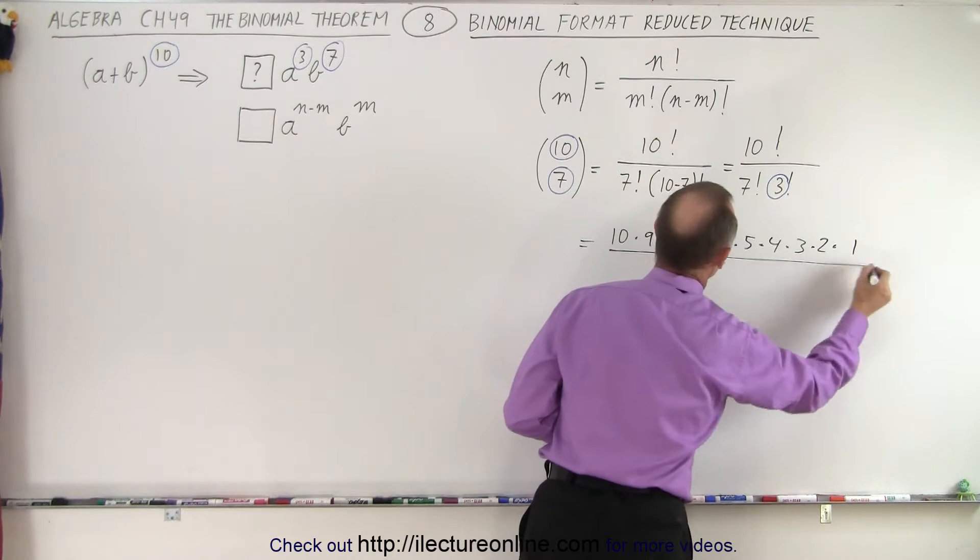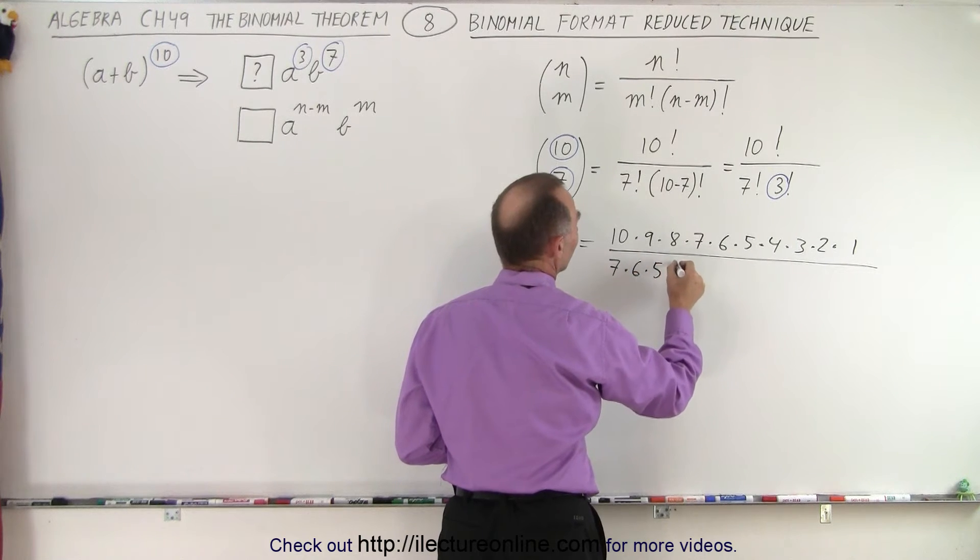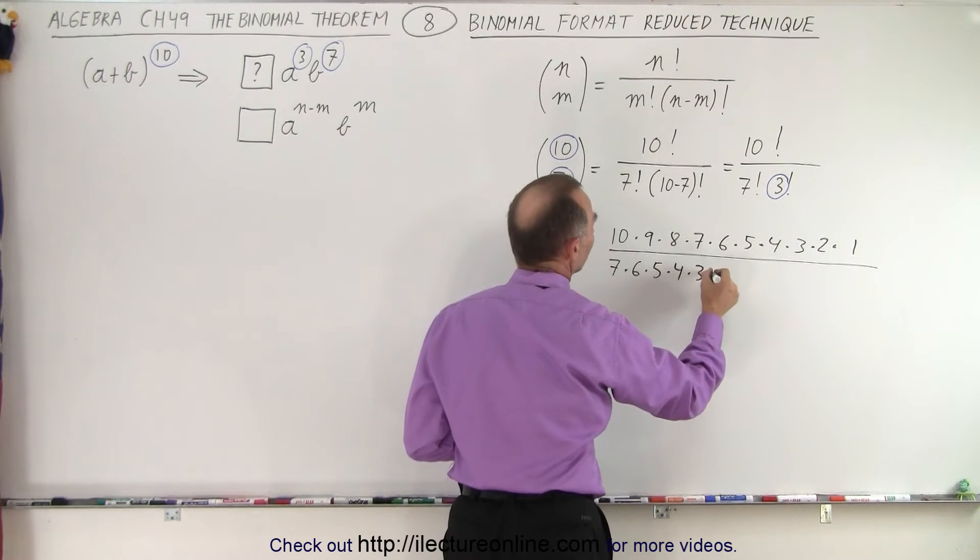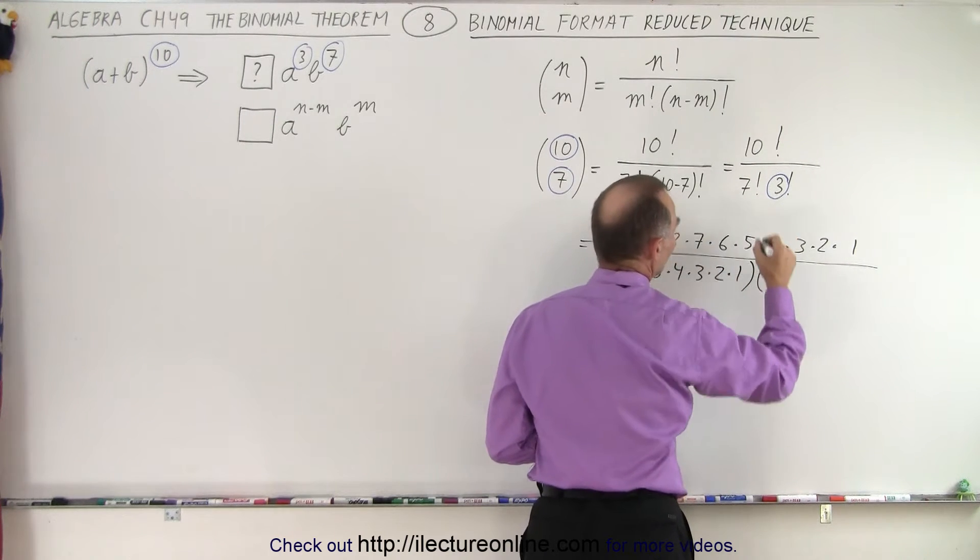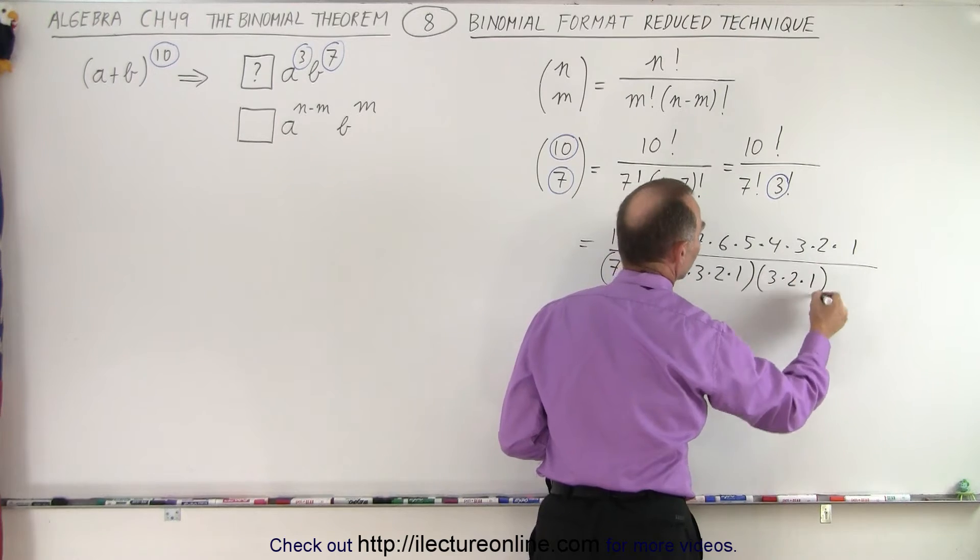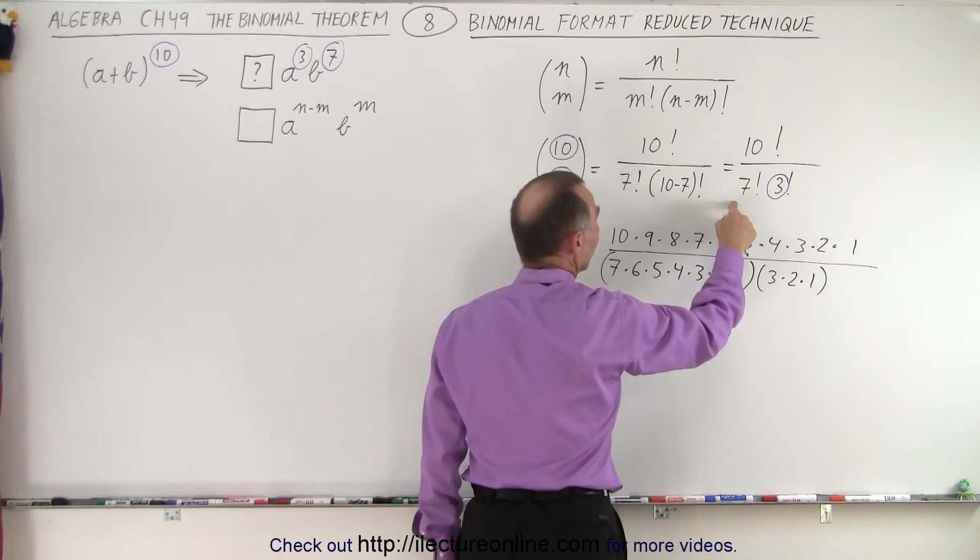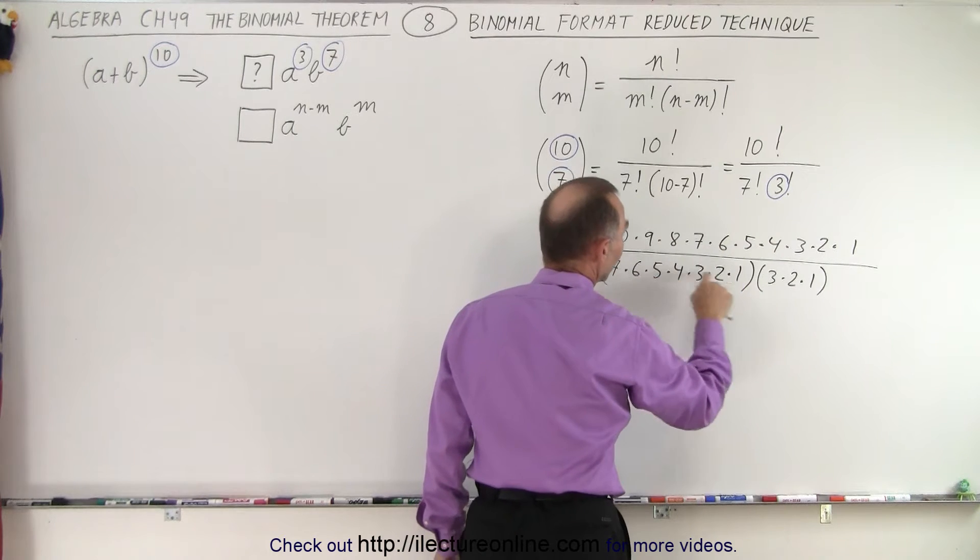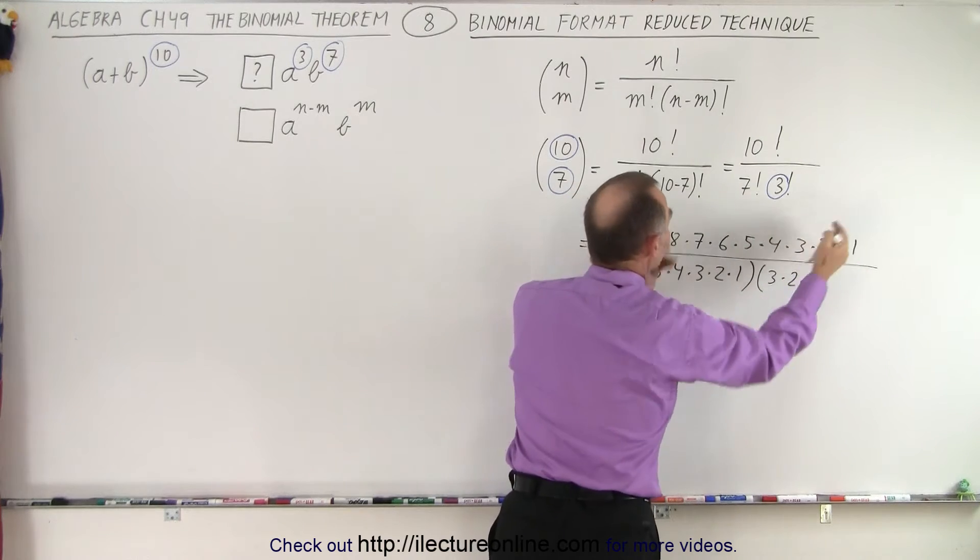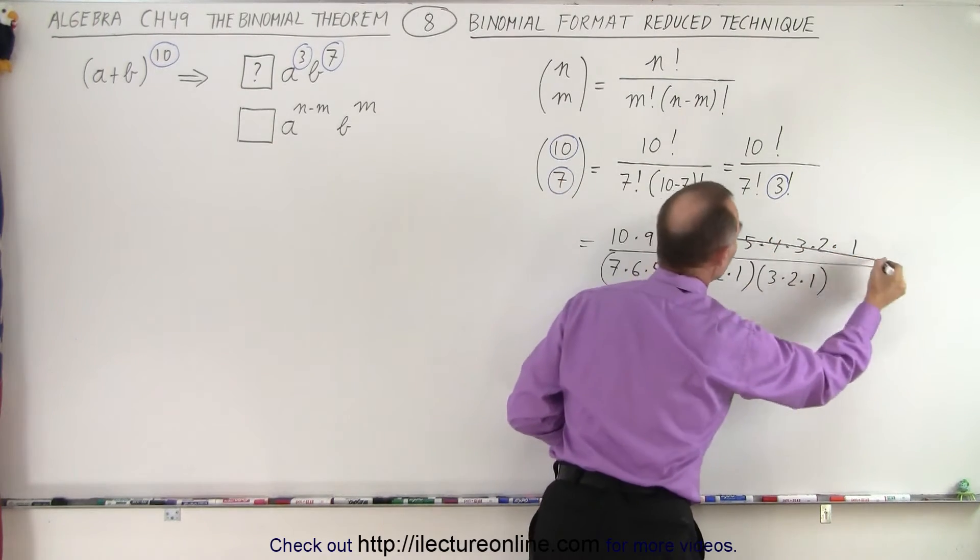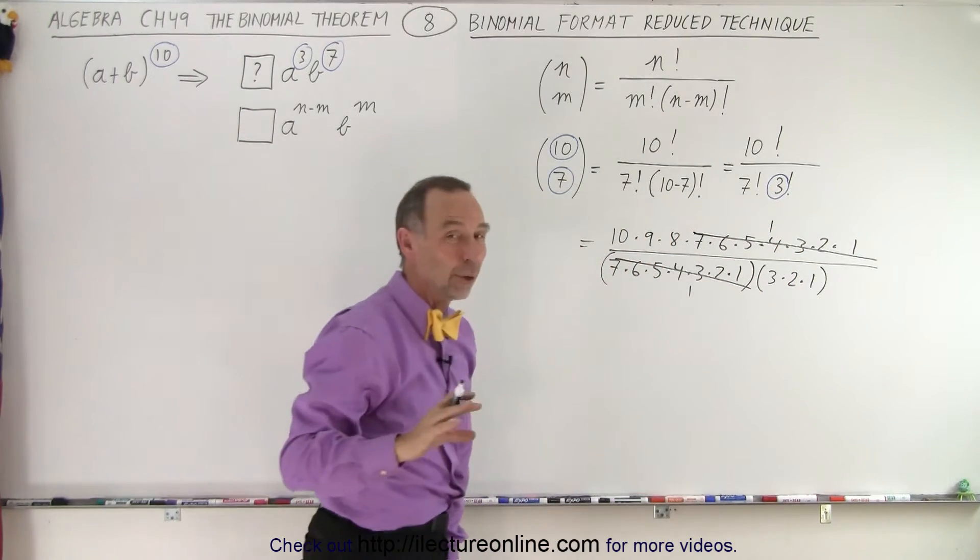So that's 10 factorial divided by 7 factorial, which is 7 times 6 times 5 times 4 times 3 times 2 times 1. And then that's multiplied times 3 factorial, which is 3 times 2 times 1. Now notice, if we have 10 factorial divided by 7 factorial, that means that 7 factorial can divide evenly into this portion of the 10 factorial. So this whole thing and this thing simply cancels out. You have a 1 and a 1, which makes things a whole lot simpler.